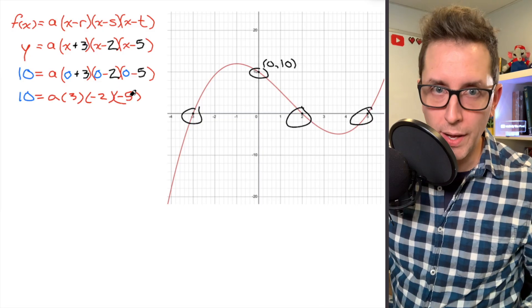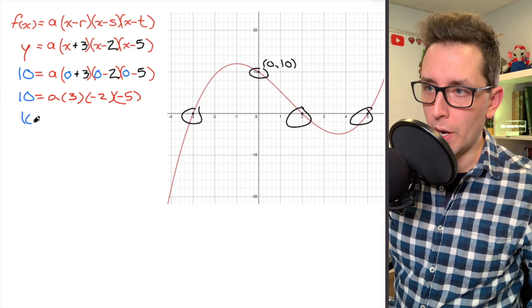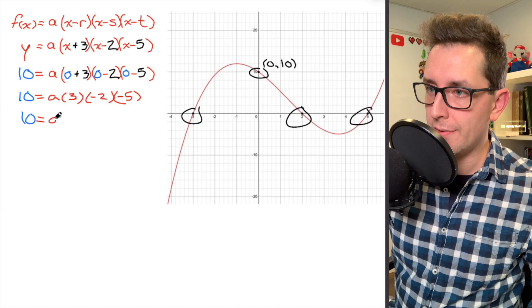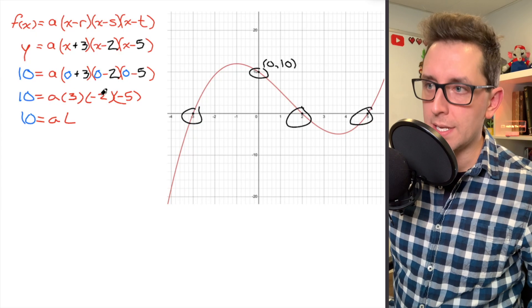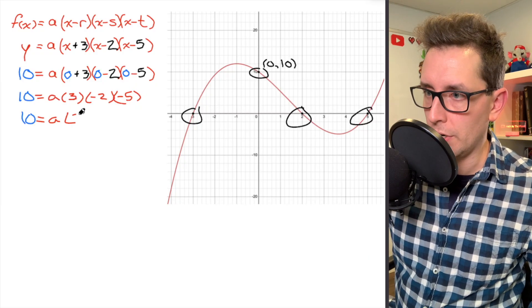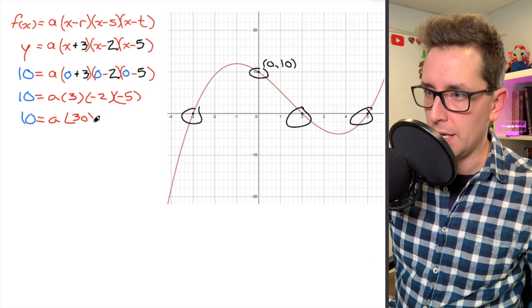So I'm just simplifying the right side of my equation here. Continuing to clean up that right-hand side, I'm just going to end up with that a value, and I'm multiplying by 3 times negative 2 times negative 5, which is just going to be 30. I've got a 30 here. I'm going to slap that in some brackets.